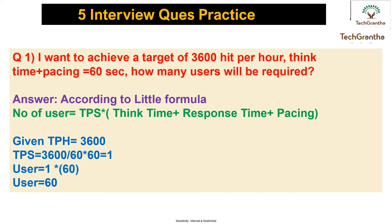In this question, 3,600 transactions per hour is given. We need to convert it to transactions per second, so 3,600 divided by 3,600 equals 1 TPS. The number of users equals 1 TPS multiplied by think time plus pacing, which is given as 60, and response time — since nothing is given, we consider it zero. So the number of users becomes 60.